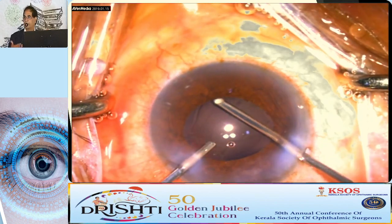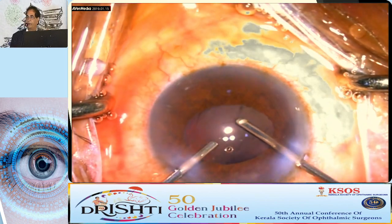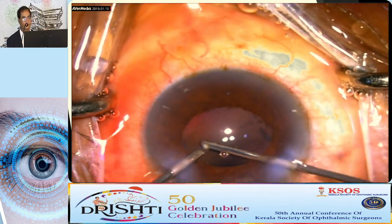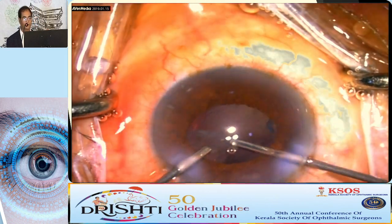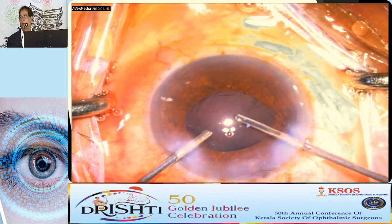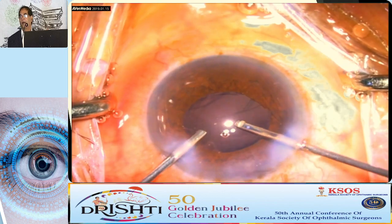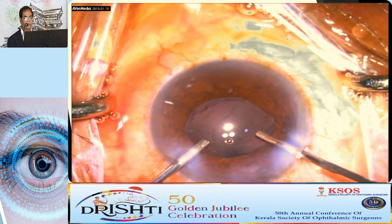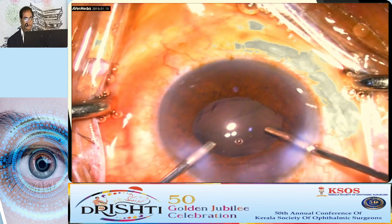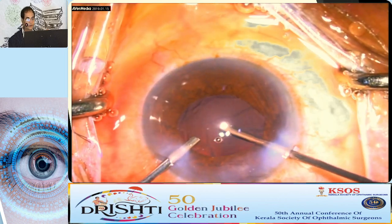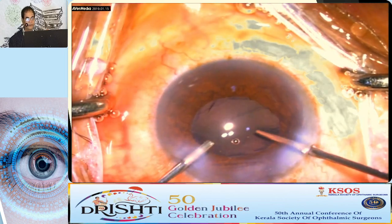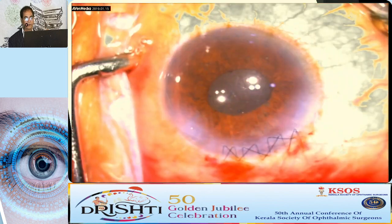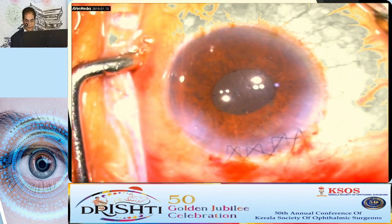Once you are thorough with vitrectomy, you can come back to IA cut mode. IA cut means aspiration comes first and the cut comes second, which helps you aspirate the cortex. I can aspirate the cortex and then give a cut, so you can remove the cortex this way. Because this was a SICS case, we implanted the lens in the sulcus and closed the case.